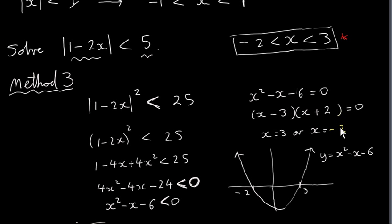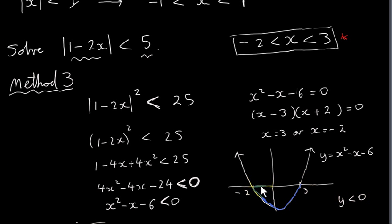Solving x squared minus x minus six equals zero gives x equals three or x equals minus two. We then draw a sketch of the quadratic y equals x squared minus x minus six. We want values of x such that y is less than zero — the points on the curve with negative y values. Those points correspond to x values between minus two and three, giving the solution minus two less than x less than three, strictly, since we want y strictly less than zero.